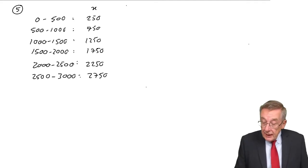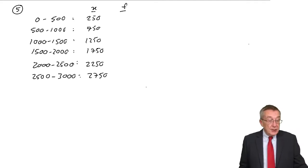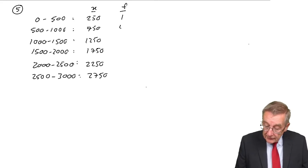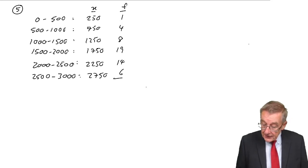And finally, so we can get going, the frequency, the number of observations: 1, 4, 8, 19, 14, 6. The total of sigma f was 52.